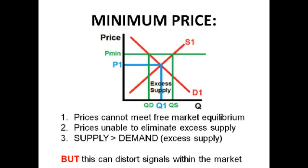For minimum prices, the minimum price has to be set above the equilibrium, otherwise it's no use. The minimum price might be set on a demerit good such as cigarettes or alcohol, because the government doesn't want people to buy them as much and wants to keep demand low. When there's a minimum price, supply is greater than demand — so there's excess supply, as shown on the diagram. This actually distorts signals within the markets because people supply more than they should, creating excess supply.